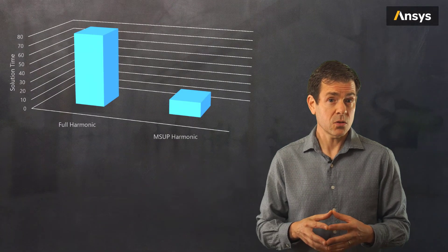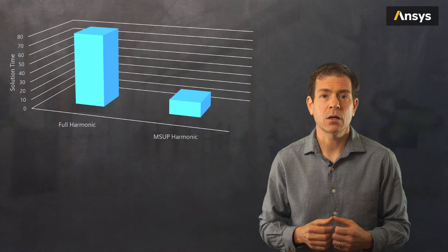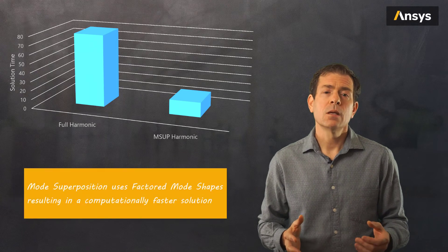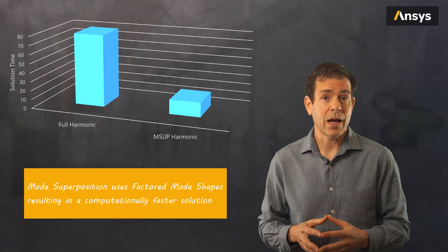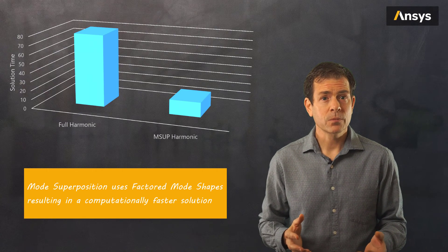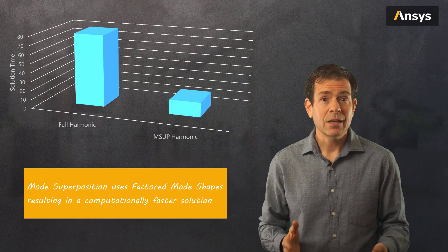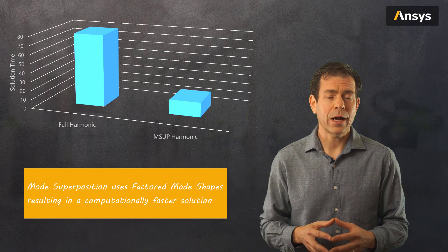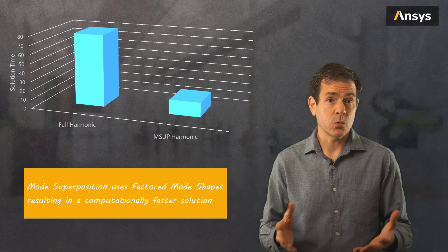So we see the method can be accurate, but what about the performance? As stated earlier, the method is an approximate technique, and with approximate techniques one can expect efficiencies in the solution, and that is exactly what we show here. Since we use factored mode shapes and not the full matrices, the computation to a solution is significantly faster. It's worth noting that for models with a small number of degrees of freedom, this performance gain may not be realized, as the full matrices for small models can be solved rather quickly, and there is some initial overhead in the MSUP solutions as the modes are computed.